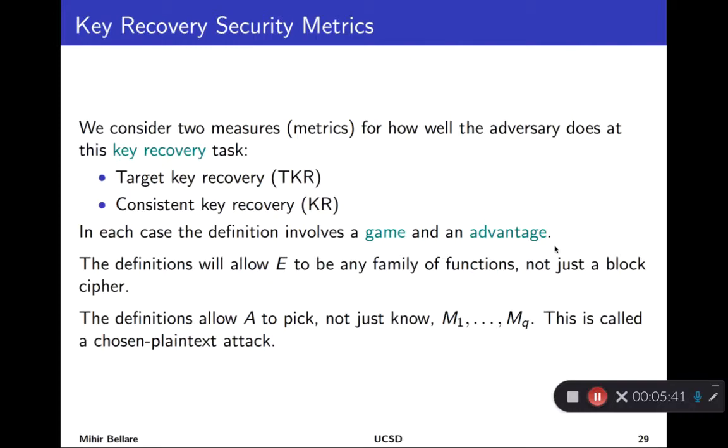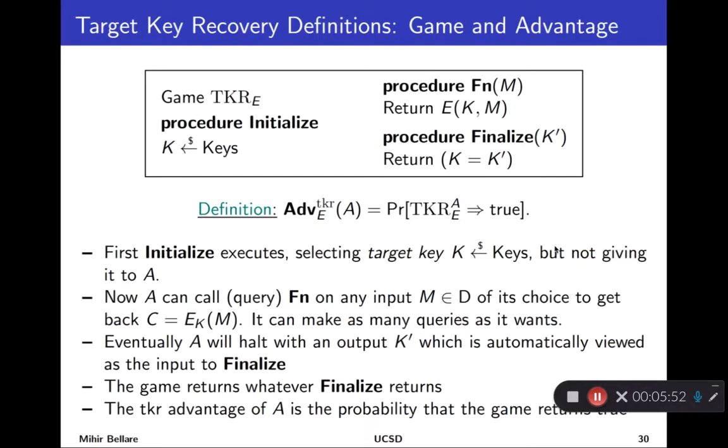One of these is what's called a chosen plaintext attack. Not only does the adversary know the data you're encrypting in its search for the key, it actually picks it. Very strange.